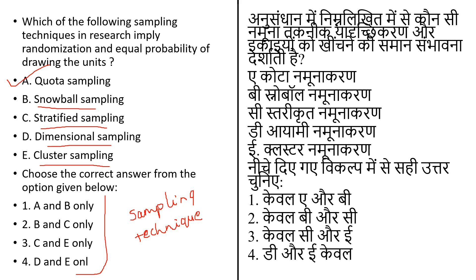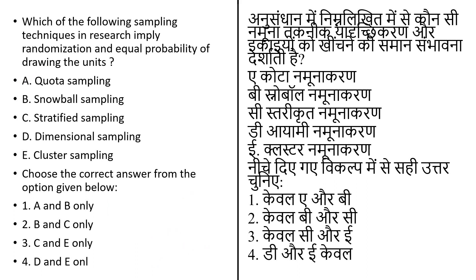The sample is divided on the basis of some characteristics, like age or gender, and on that basis the whole sample is divided. The correct answer to this question is option C and E only — stratified sampling and cluster sampling are included here.